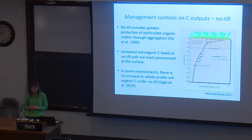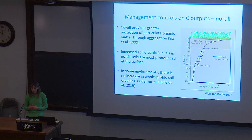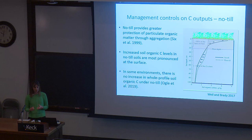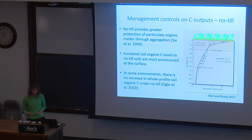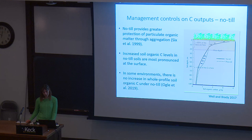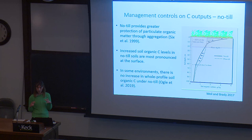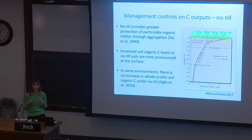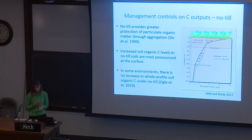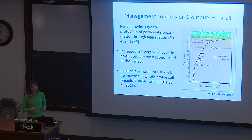No-till is another management control, because with less disturbance, aggregates aren't broken up and we have better aggregate stability. However, that's really mostly observed near the soil surface. This diagram shows how the no-till depth distribution of carbon is much more stratified than a tilled system. Looking at just the top 20 centimeters, there's a big advantage of no-till in terms of soil carbon, but as you go deeper, that effect can even reverse, because tillage buries carbon deeper in the profile. When looking at the whole profile, there may not necessarily be an increase due to no-till.